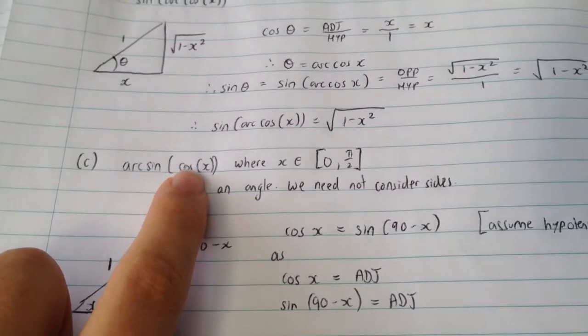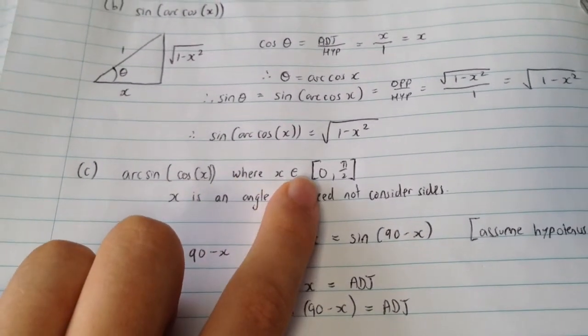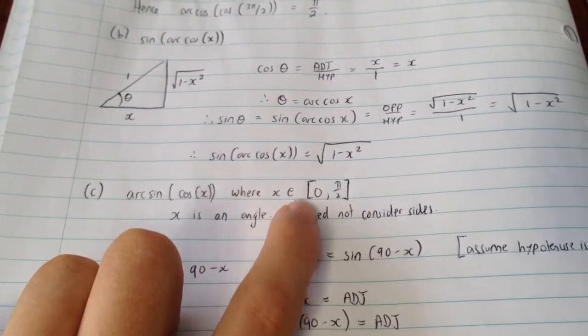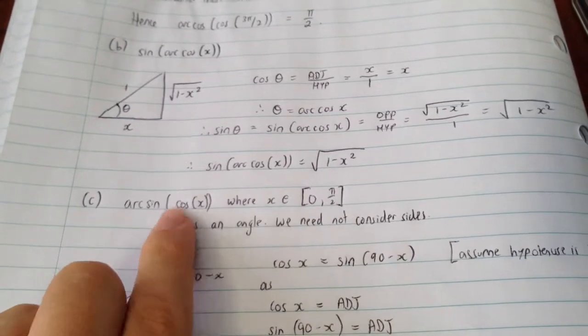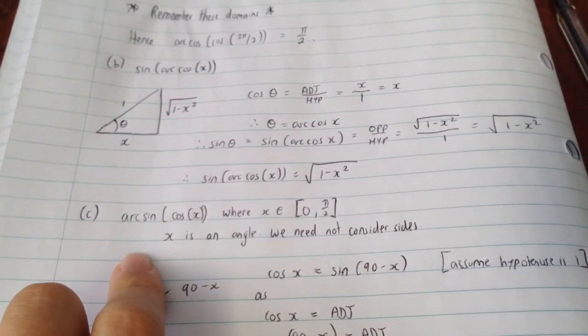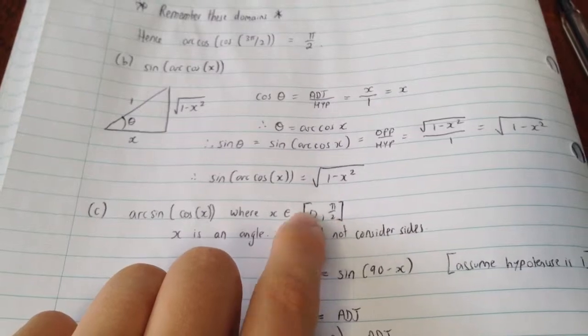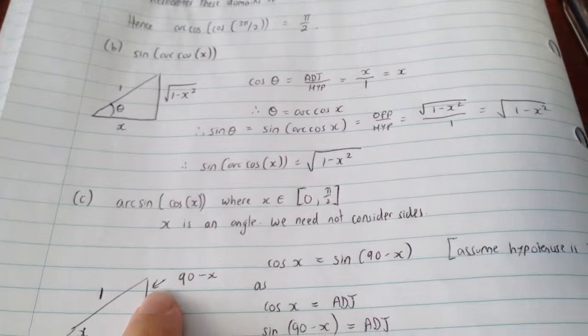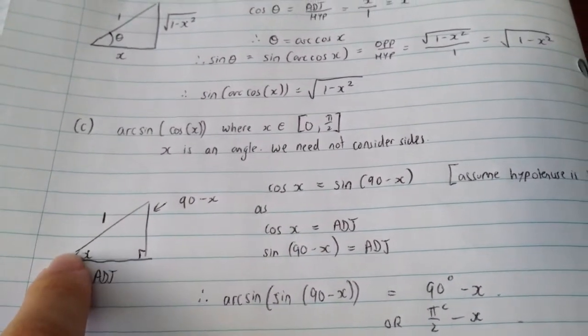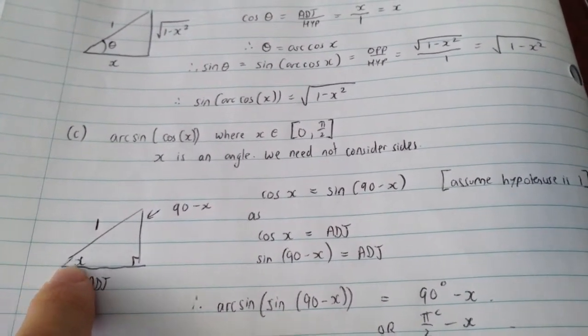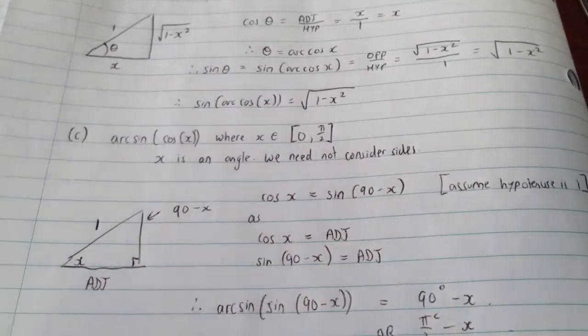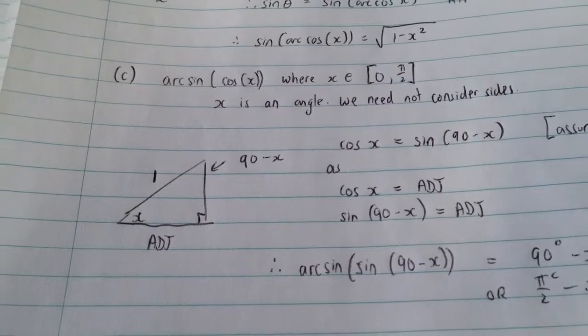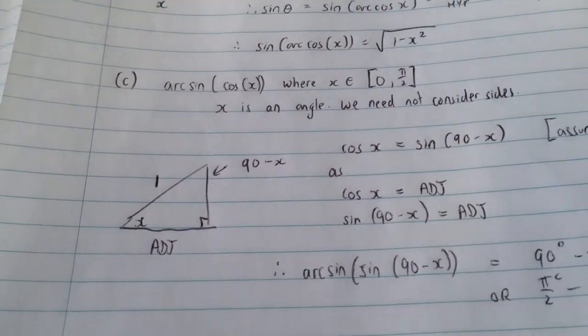Lastly, arcsin(cos(x)), where x belongs to the domain of 0 to π/2 inclusive. Well, here we know that x we want to consider as an angle rather than considering a side because we're given something that makes sense if we were to consider x as an angle. So, as such, we draw a triangle and we list x as an angle. And the good thing is when we're working with angles, we'll keep the hypotenuse equal to 1 because that will simplify calculations.